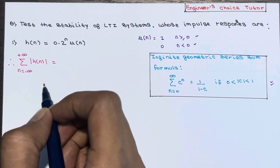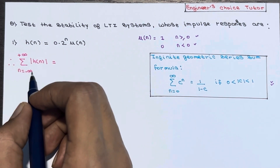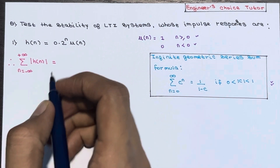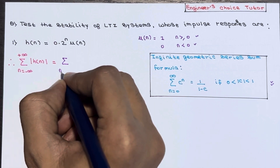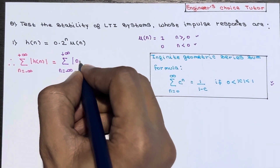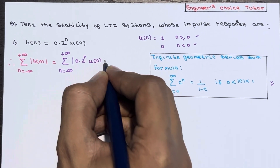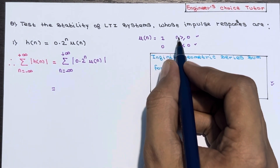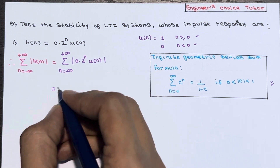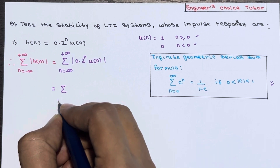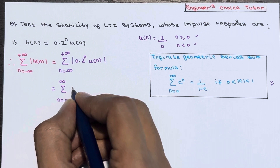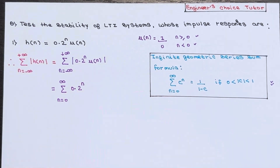For stability, the summation of absolute value of h(n) over the limit n from minus infinity to plus infinity should be smaller than infinity. So we evaluate summation from minus infinity to plus infinity of absolute value of 0.2 to the power n into u(n). Since u(n) is only defined for n greater than or equal to 0, we change the limits to n equals 0 to infinity, where u(n) equals 1, so this becomes 0.2 to the power n.